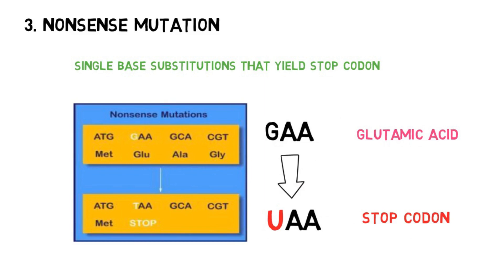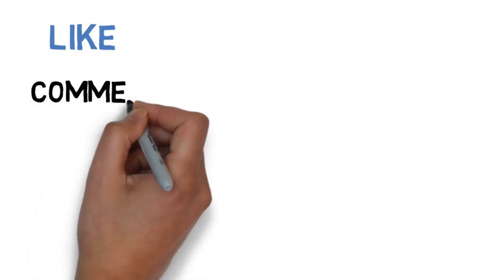That's all for this video. In this video, we saw gene mutation and its first type, point mutation. The second type, frameshift mutation, we will see in the next video. If you liked this video, please like the video and comment.